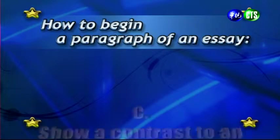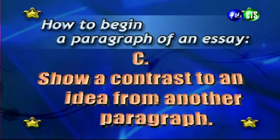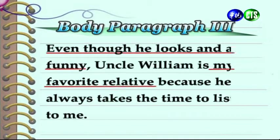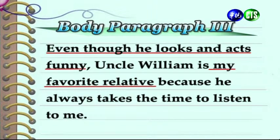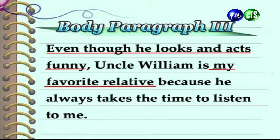Another strategy is to show a contrast to an idea from another paragraph. 第三個可以使用的策略，則是與其他的段落做一個對比。And we can see here in body paragraph 3, the topic sentence is: 'Even though he looks and acts funny, Uncle William is my favorite relative because he always takes the time to listen to me.' 我們現在看到的是主體論述第三段的主題句，它說雖然威廉叔叔外表行事都很好笑，但是因為他總是願意花時間聽我講心事，所以他是我最喜歡的親戚。